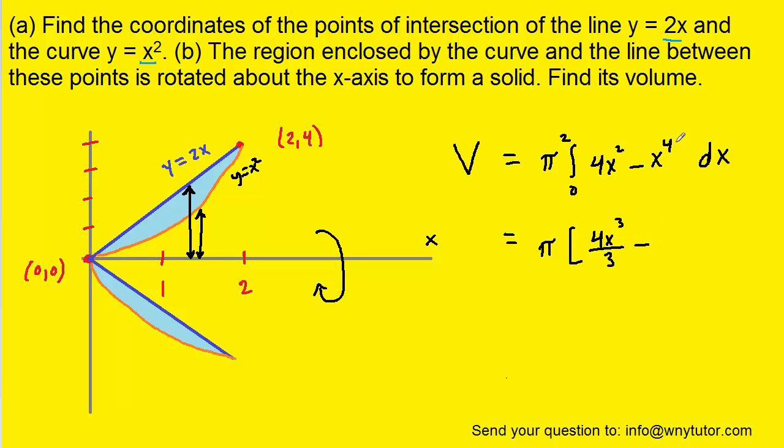We're going to add 1 to the exponent to make x⁵ and then divide by that new exponent, which is 5. Then we're going to evaluate this integral from 0 to 2.